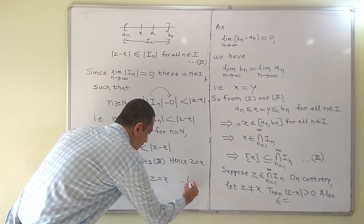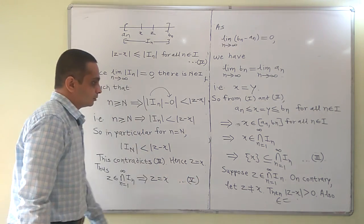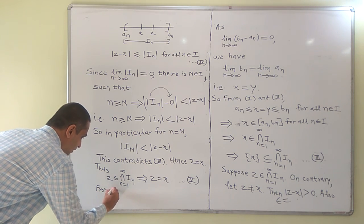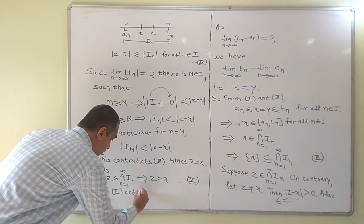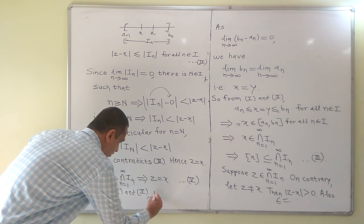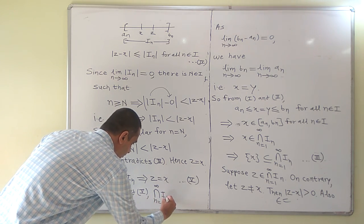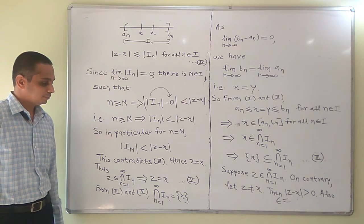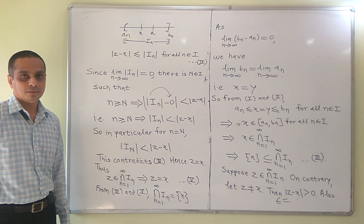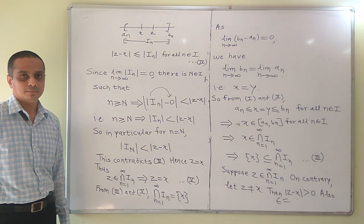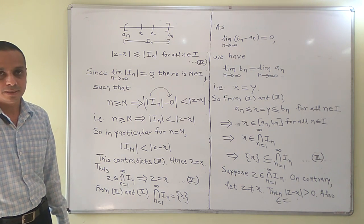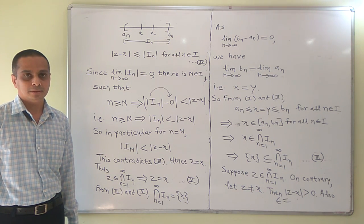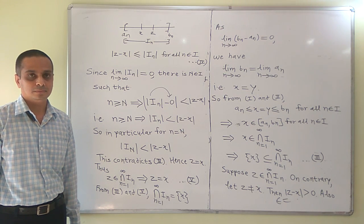From statements three and five, the intersection of all I_n is equal to the singleton {x}. This is what we wanted to prove: the intersection of I_n is singleton {x}. This completes the proof of the Nested Interval Theorem, and also completes the second chapter on sequences of real numbers. In the next lecture, we will begin with series of real numbers. Thank you.